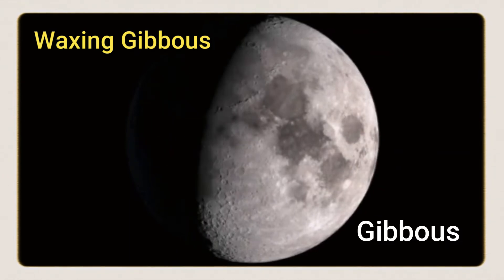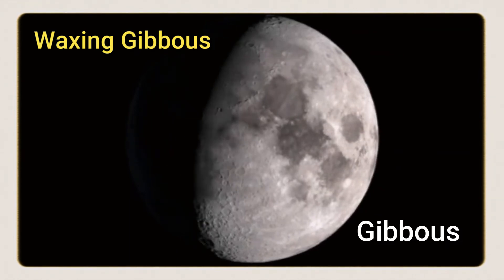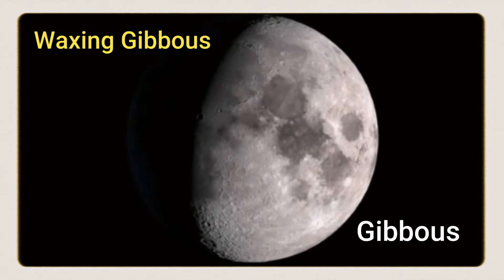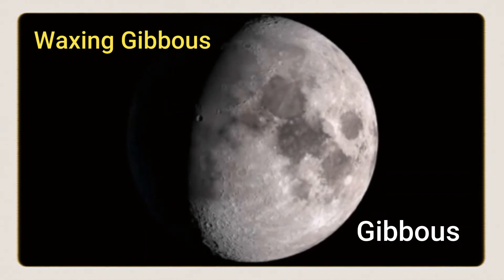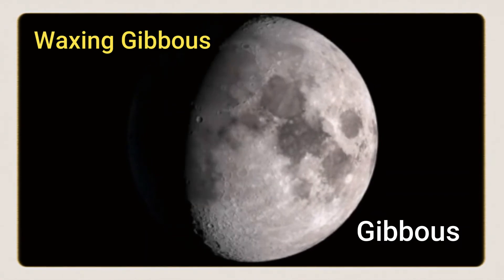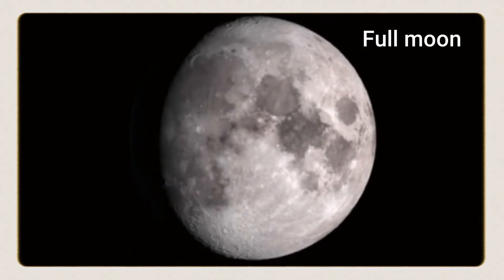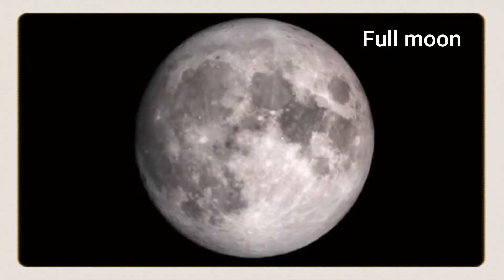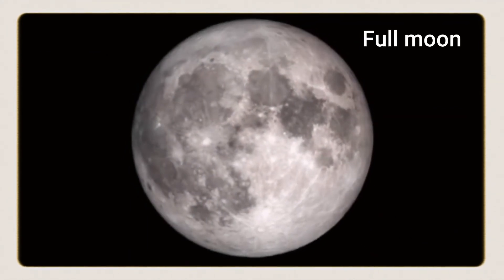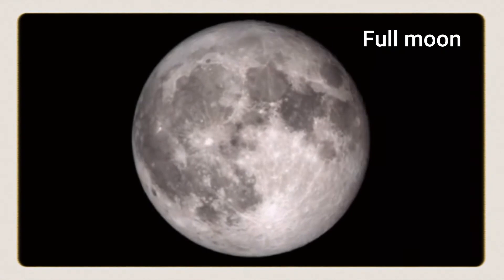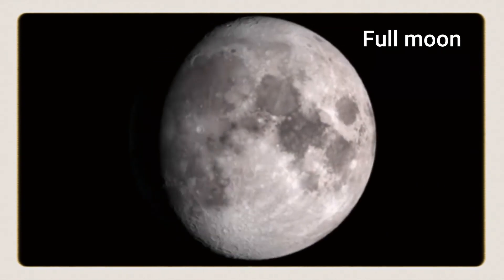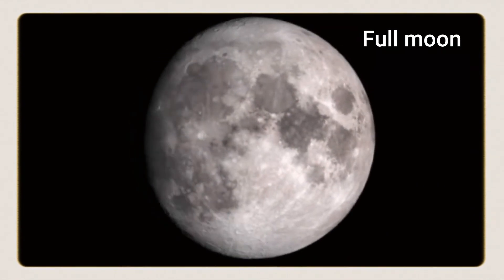After the waxing gibbous phase, we see the full moon. The lighted portion of the moon goes on increasing and it becomes full moon. Full moon is when the moon is fully illuminated as seen from the earth.